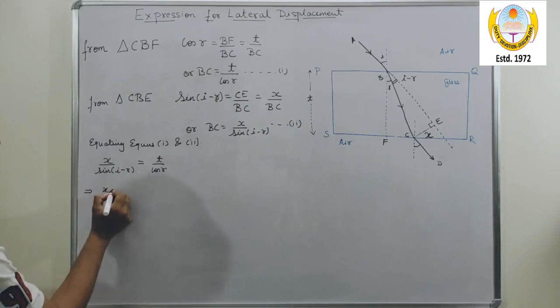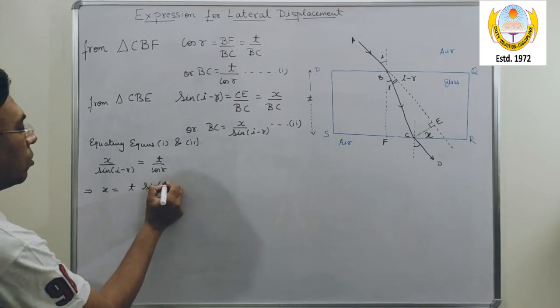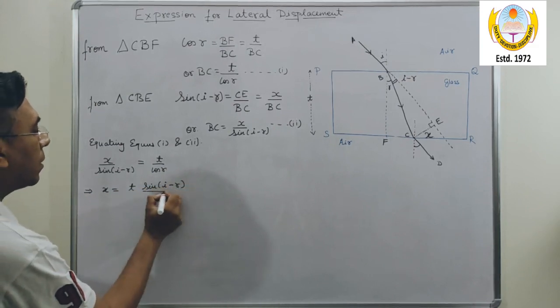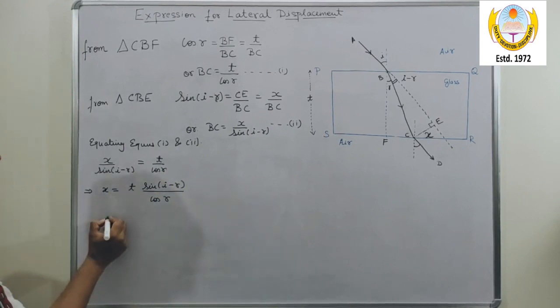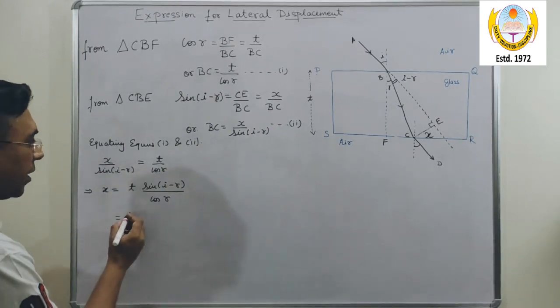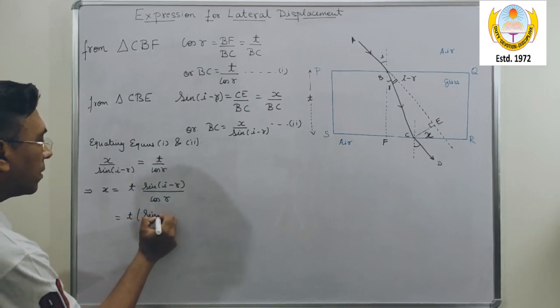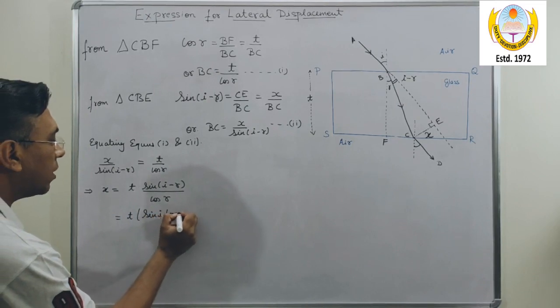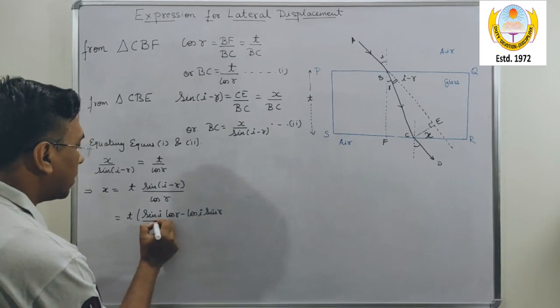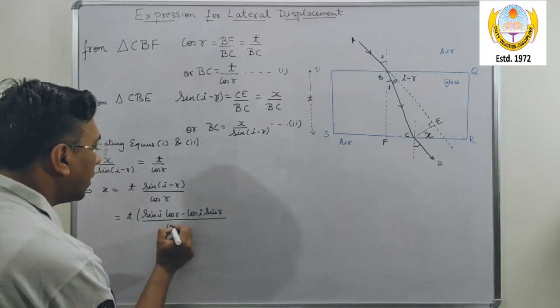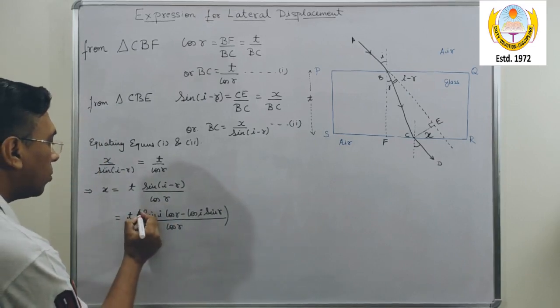I get X upon sine of I minus R equals to T upon cos R. Or I can write X equals to T sin of I minus R. Now when I expand sin of I minus R, I can write sin I cos R minus cos I sin R divided by cos R.